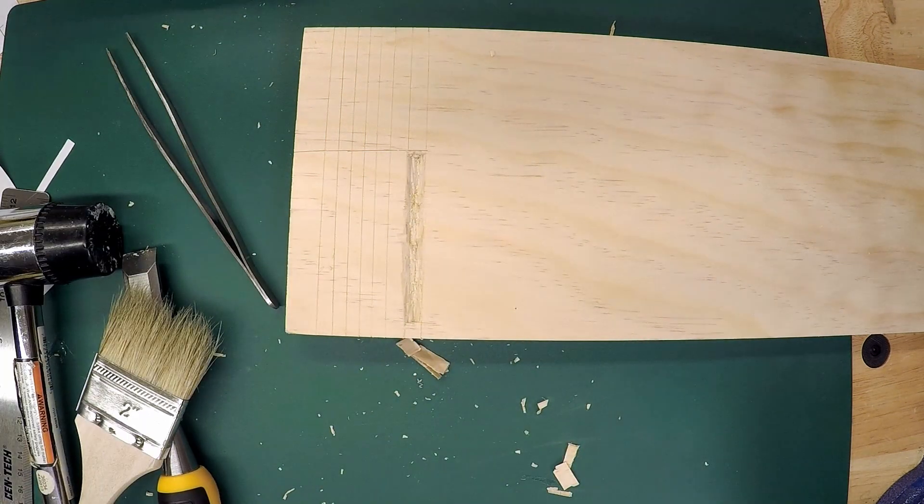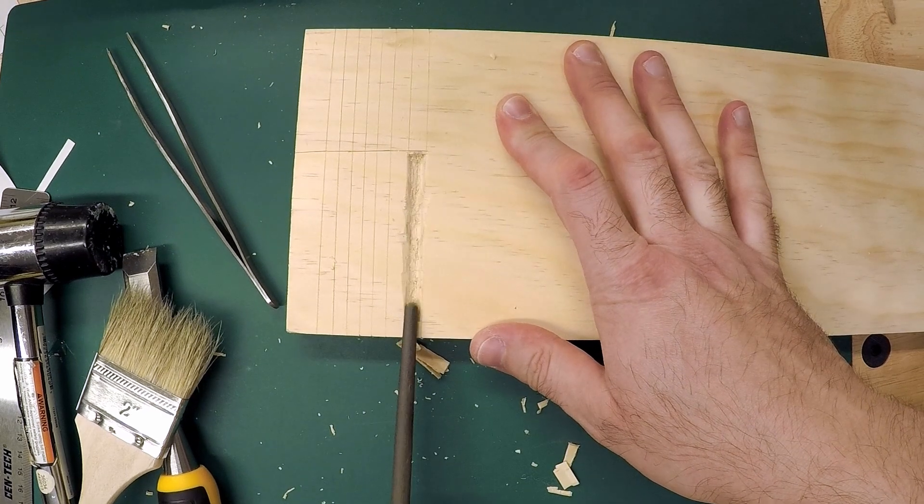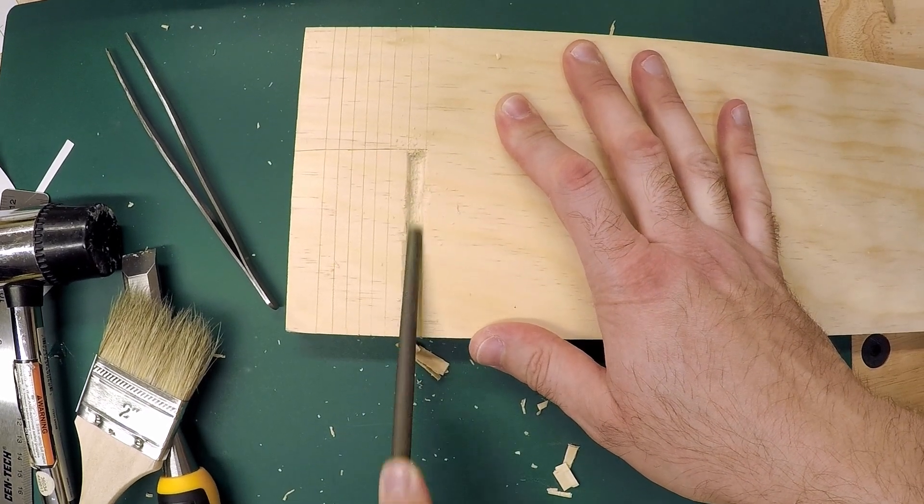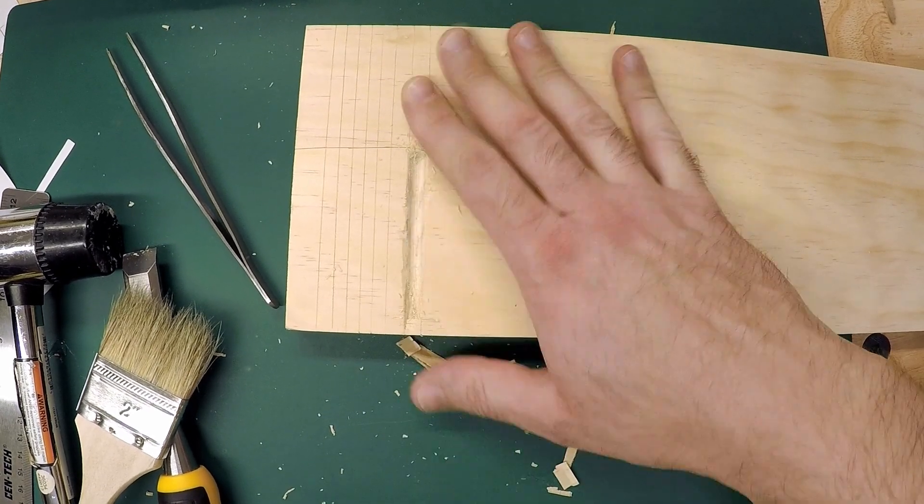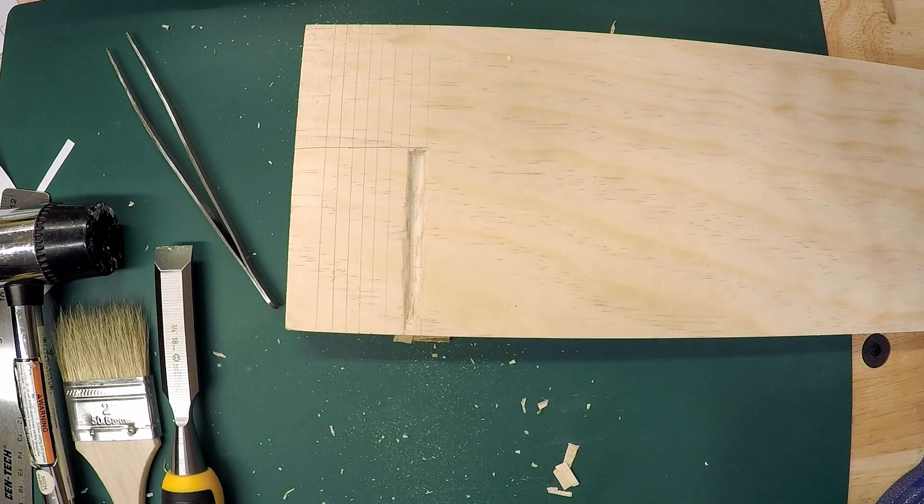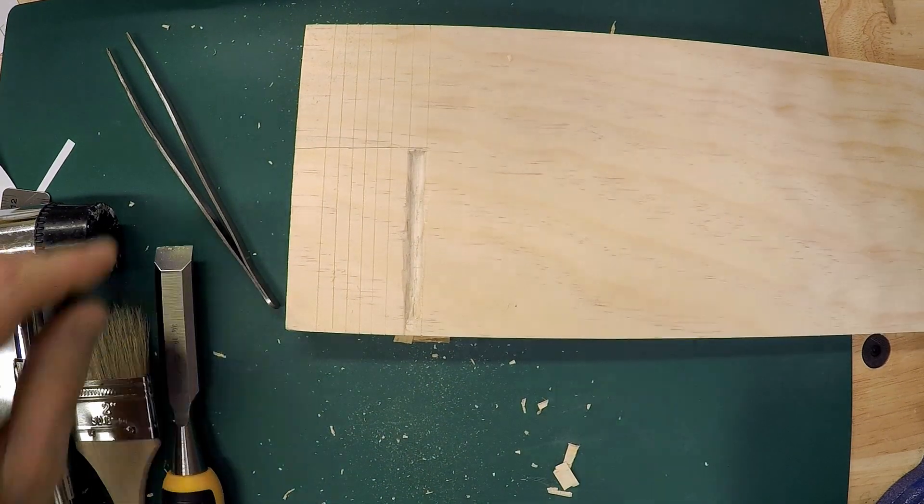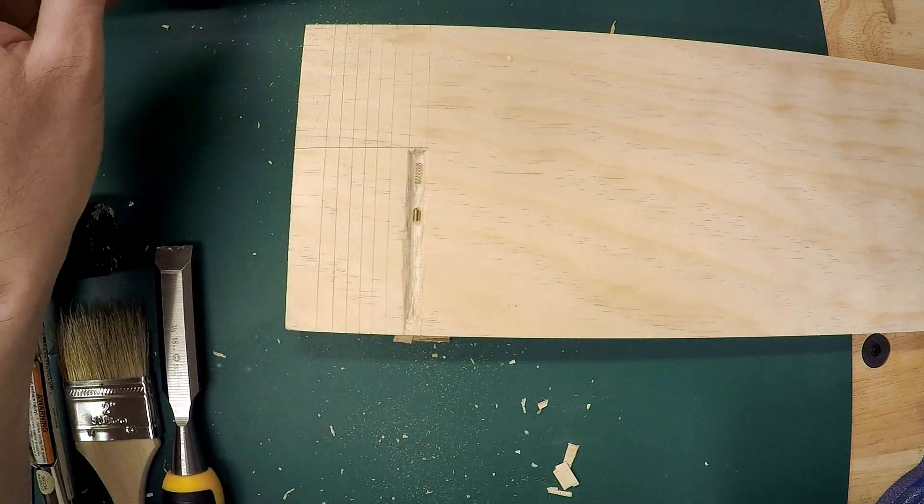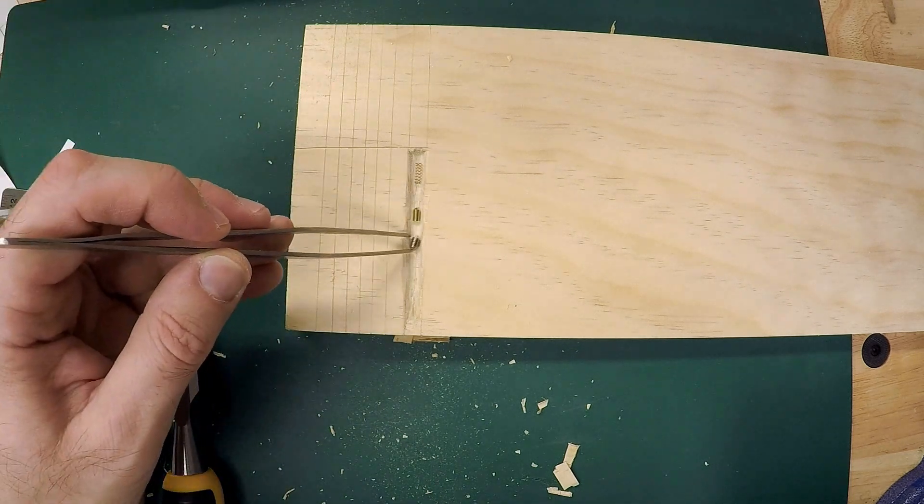Now I've got that extended slot to work in. I'm going to come in with a file and just sort of clean that up a little bit. And you can use a file or some sandpaper wrapped around a stick or whatever you have. And just kind of clean that up a little bit more. And if you put in even a little more work than this, you can really smooth it out and make it look really, really nice.